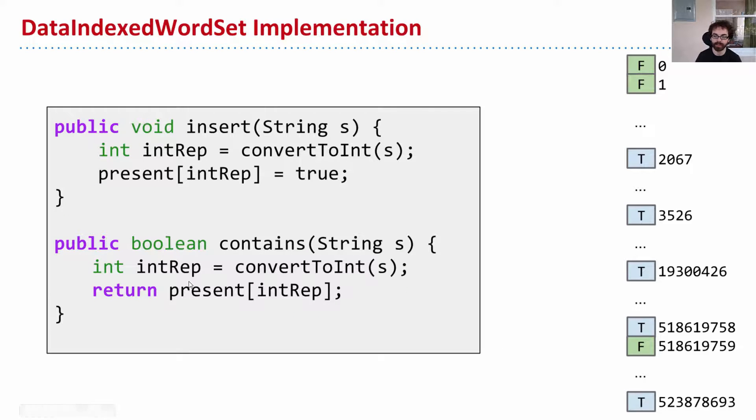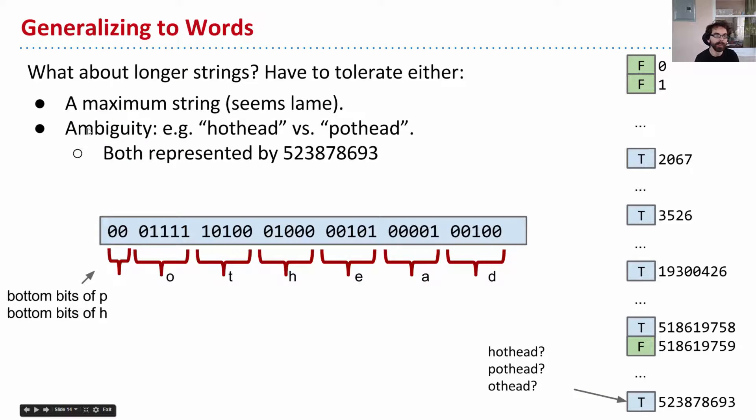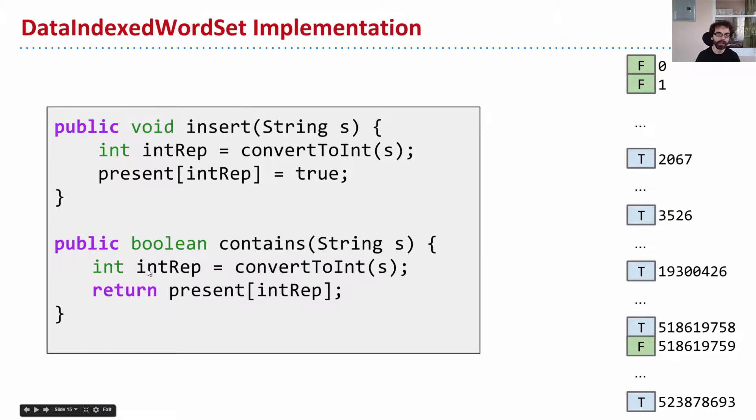So what would insert look like? So again, I'm ignoring these annoying issues. We'll come back to them in the next segment. But here, if we just were willing to tolerate this ambiguity, then it might look something like this. So when I insert a particular string, I first convert it to an integer, and I set that position to true. And then whenever I do contains, I would first convert that string to an integer, and then just return that item. And yes, there's some ambiguity, because here, if I insert hothead, and then I check contains pothead, it will say true. But that's something we'll fix soon.